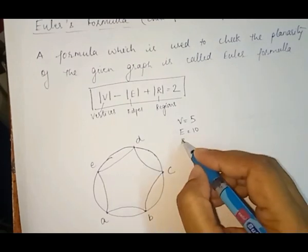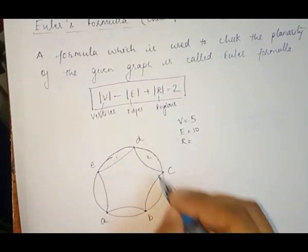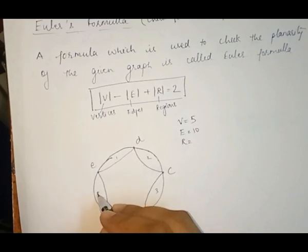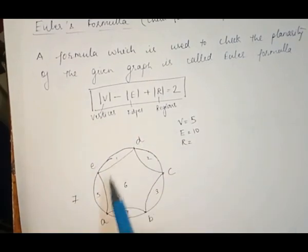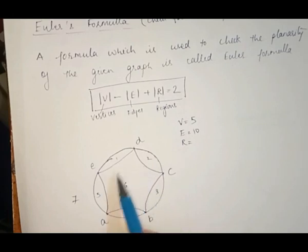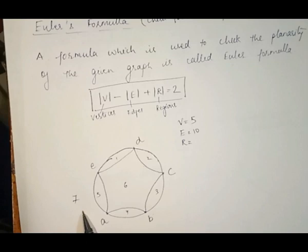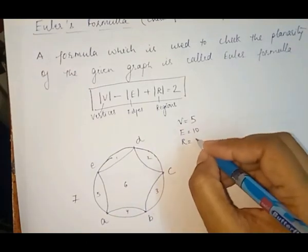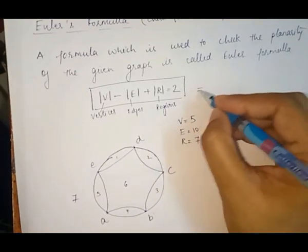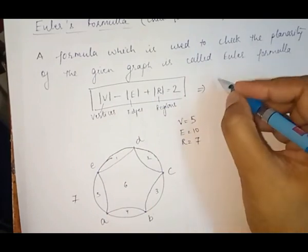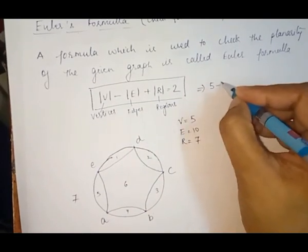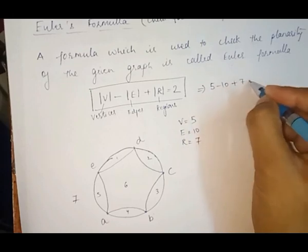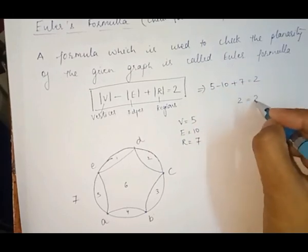The regions are 1, 2, 3, 4, 5, 6, and the outer region is 7. Regions 1 to 6 are bounded, and the 7th region is an unbounded region, as we discussed in my previous video. Therefore, regions equals 7. Now we substitute all these values in this formula and check whether the equality holds or not: 5 - 10 + 7 = 2. The left side also comes out to be 2.